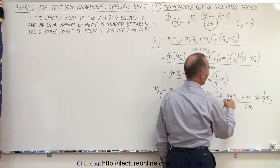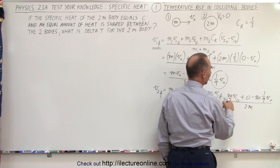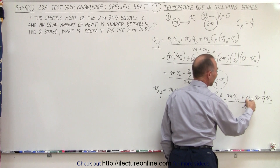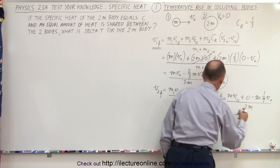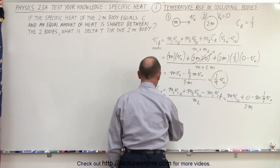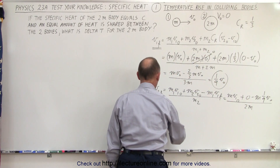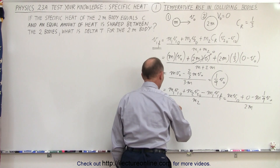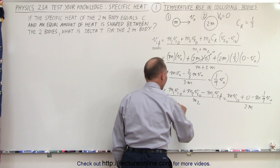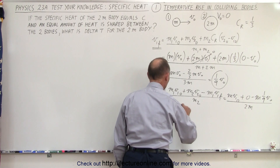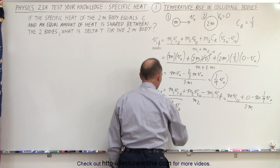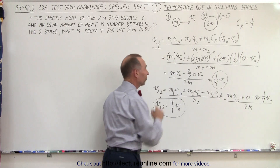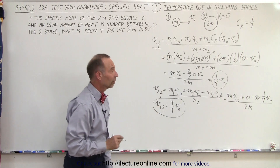So we have m·v-initial minus one-ninth, divided by 2, which gives us v2-final equal to 8 divided by 2, or four-ninths v-initial — v-initial being the initial velocity of the first object.